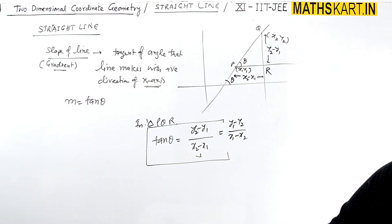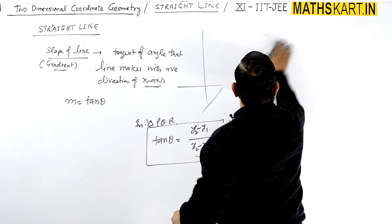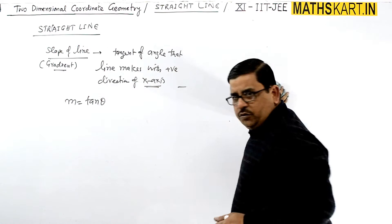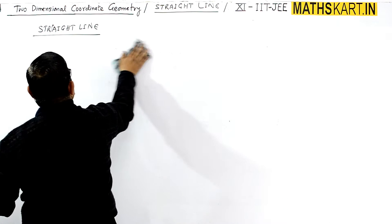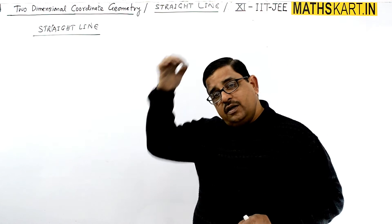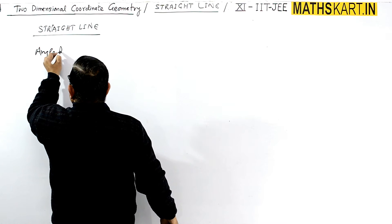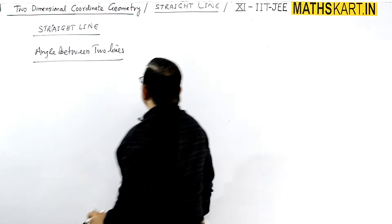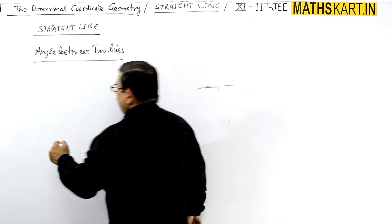Next we discuss the angle between two lines, and the conditions for parallel and perpendicular lines. We will derive the formula completely so we understand how it works. Let's say this is line 1 (l1 = 0) and line 2 (l2 = 0).